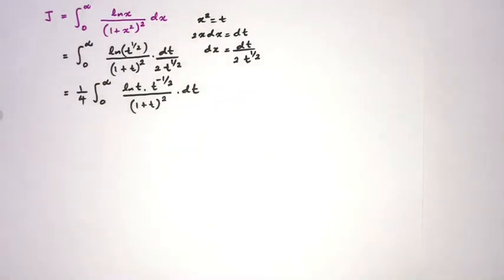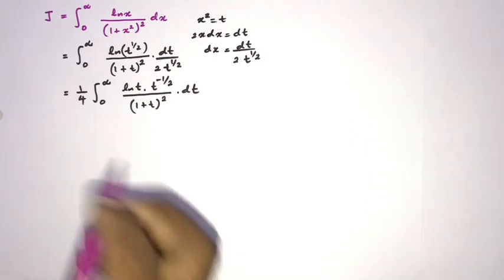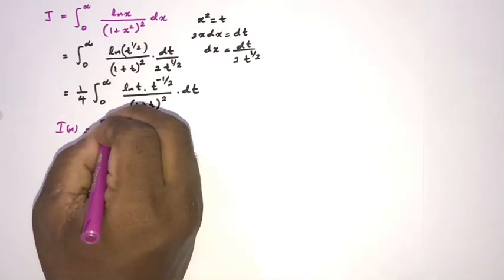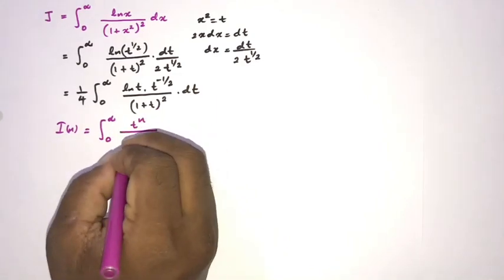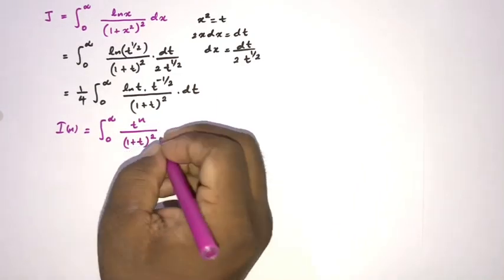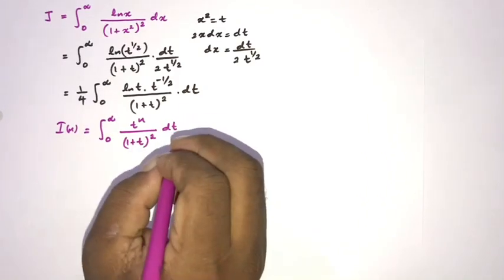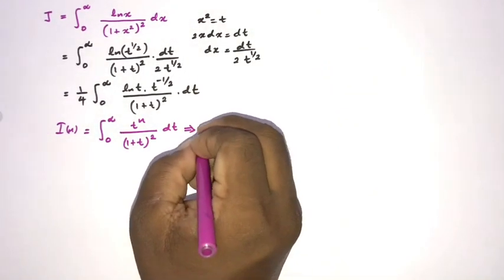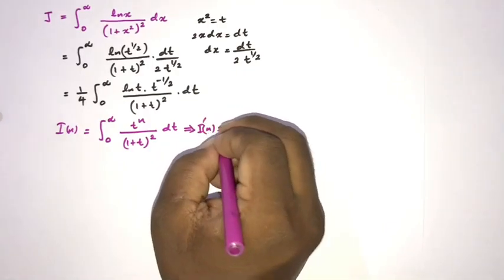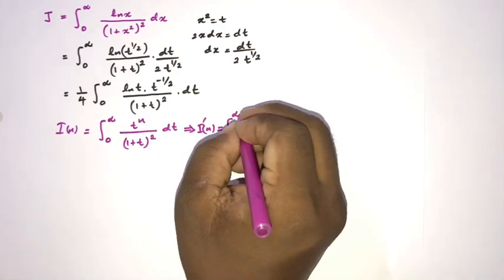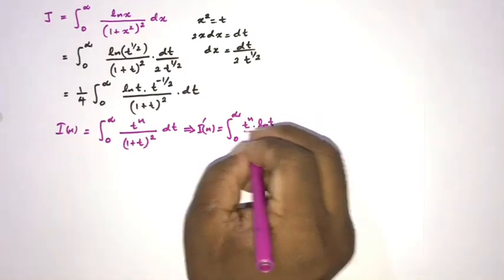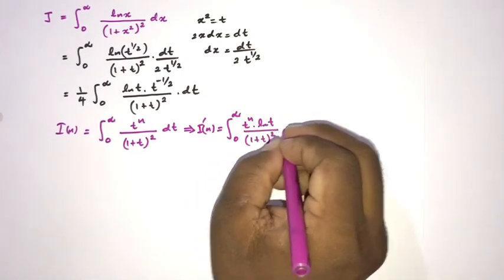Now I define a parametric integral: I(n) equals the integral from 0 to infinity of t to the n over (1 plus t) squared dt. If we differentiate with respect to n, we get I'(n) equals the integral from 0 to infinity of t to the n times ln(t) over (1 plus t) squared dt.